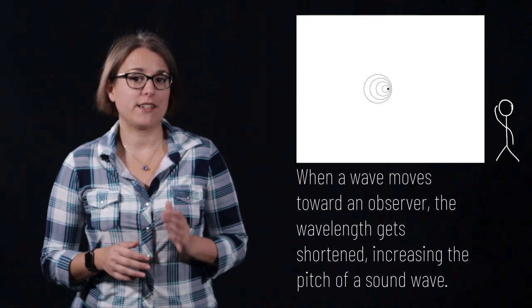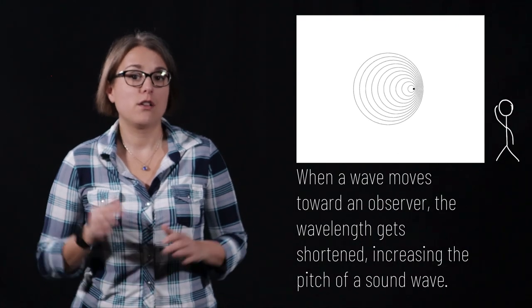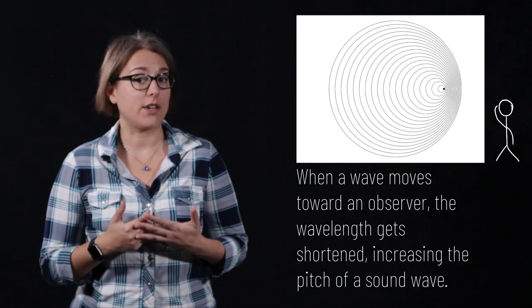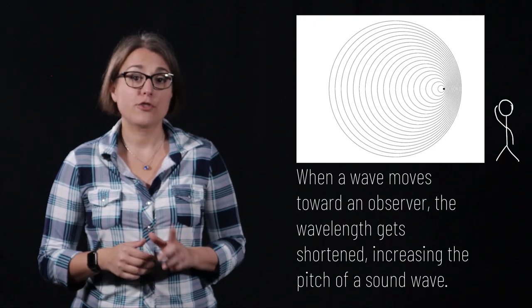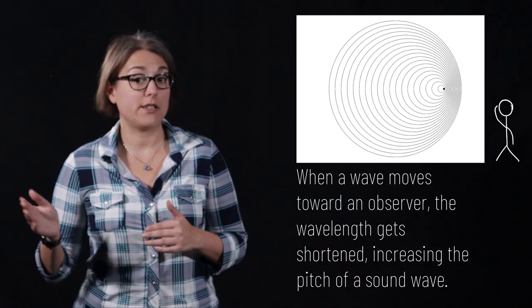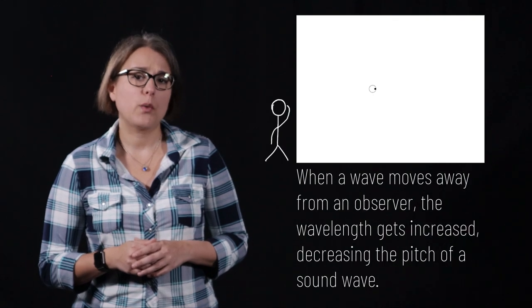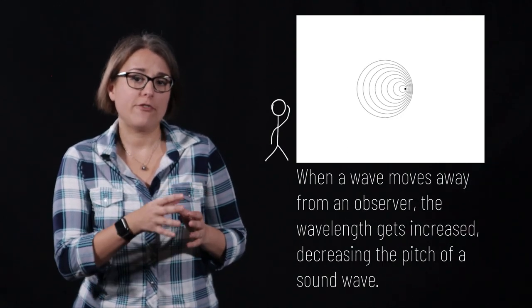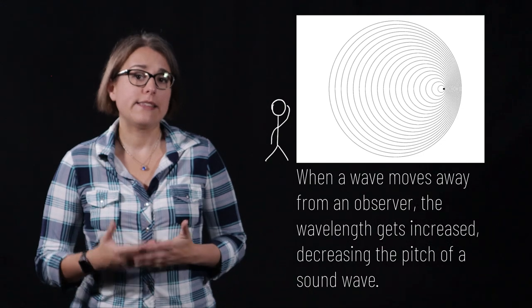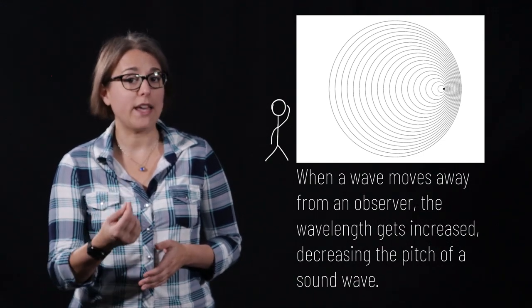Have you ever noticed that when an ambulance or police car drives by, the pitch of the sound of the siren seems to change? This is due to the Doppler effect. When a wave is traveling at a certain speed relative to an observer, the wave fronts become bunched up in the direction of motion — this shortens the wavelength and, given a constant wave speed, increases the frequency. Frequency and pitch are related in sound waves, which is why a siren sounds higher pitched when an ambulance is approaching. As the wave travels away from the observer, the wave fronts are spread farther apart, increasing the wavelength and decreasing the frequency — which is why a siren sounds lower pitched when moving away.